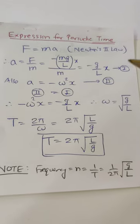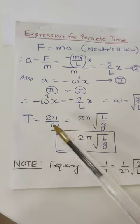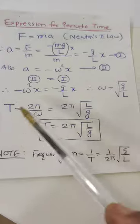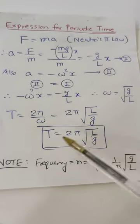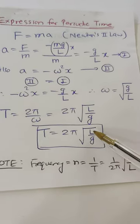What is period T? 2π by omega. That is 2π upon root of g by l, means 2π root of l by g. Therefore T equal to 2π root of l by g.